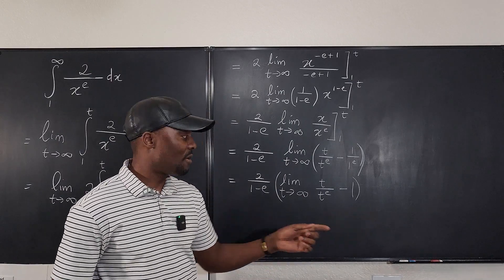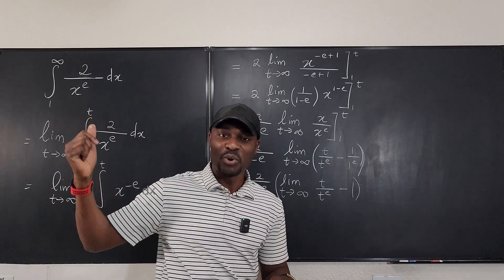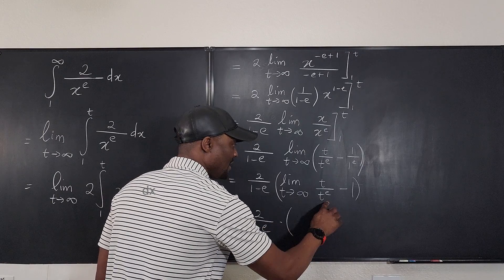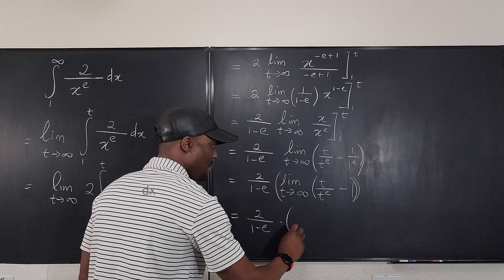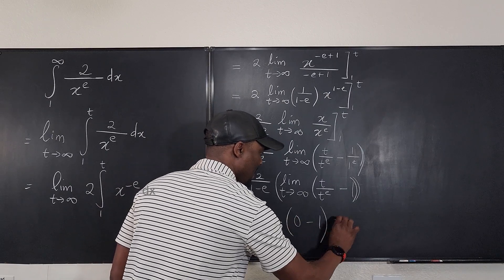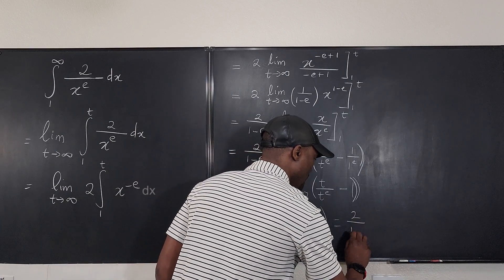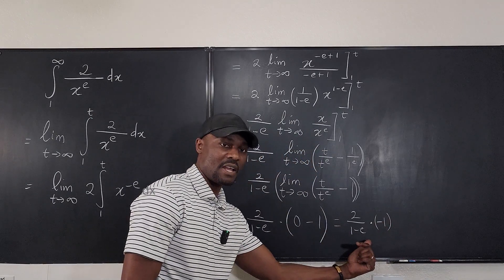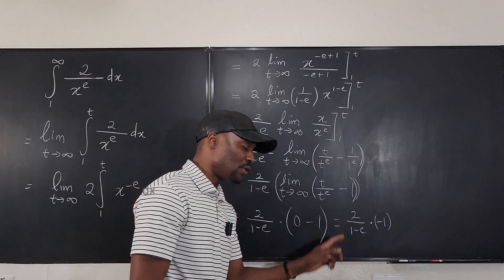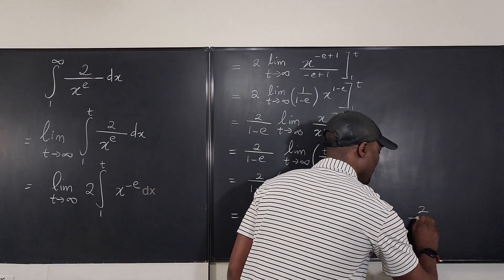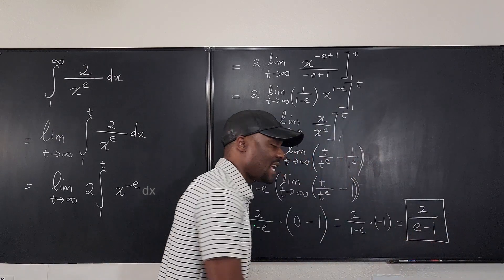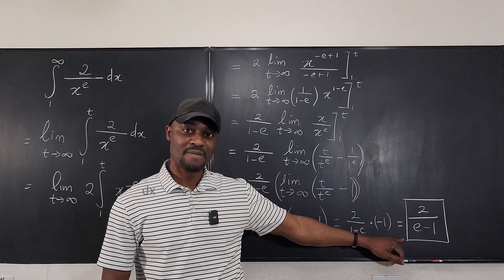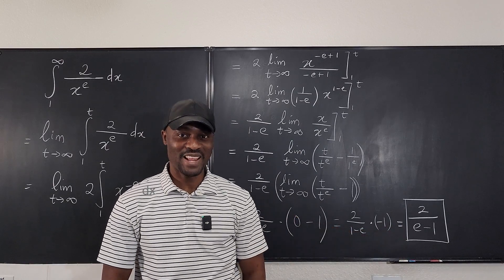We're here to learn about improper integrals. This limit goes to zero, so we have 2 over 1 minus e, multiplied by zero minus negative 1, which gives negative 1. Multiplying by negative 1 flips the sign, giving negative 2 over 1 minus e, or equivalently 2 over e minus 1. This is 2 divided by e minus 1, and that is what this integral gives you when you go from 1 to infinity. Never stop learning — those who stop learning have stopped living. Bye!